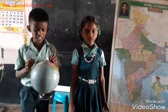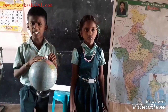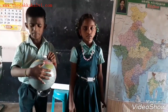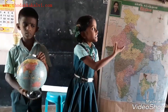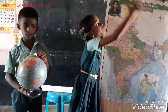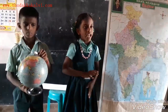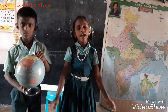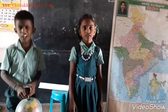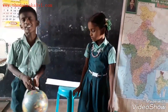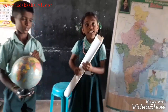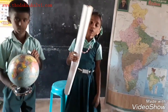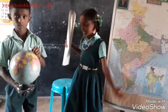We can see one part of the land when we rotate the globe. We can see the entire world in a spread out manner on a map. The globe is difficult to carry around. The map can be easily carried to different places.